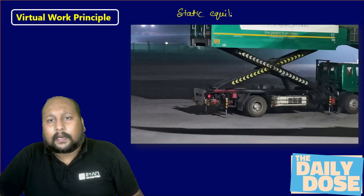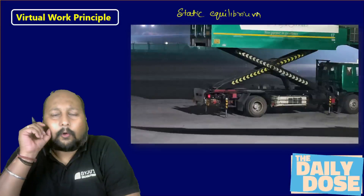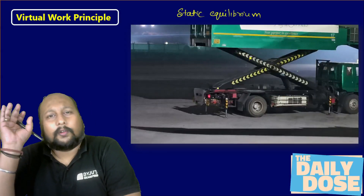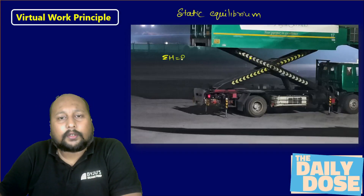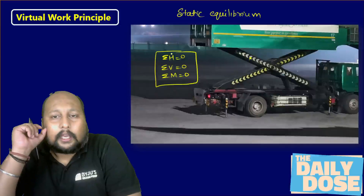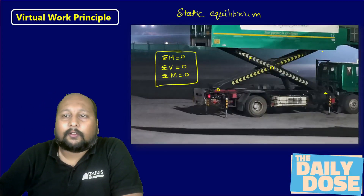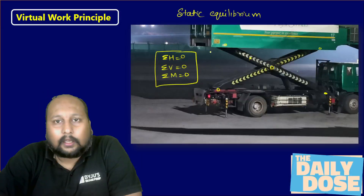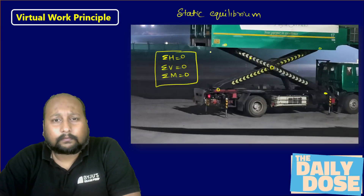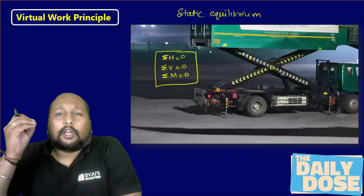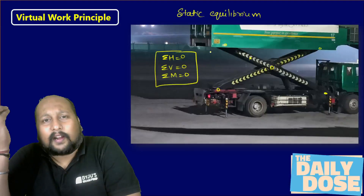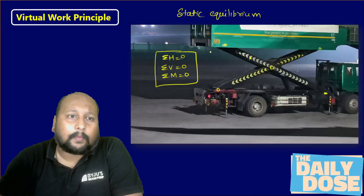If I want to calculate the reaction forces or the amount of force present at each point, the simple approach is: summation of horizontal forces = 0, summation of vertical forces = 0, summation of moments = 0. But applying this at each joint can take 10 to 15 minutes or more, with many equations and very long formulations. Let me tell you an easier method — using this method, you'll be able to analyze static equilibrium in just four to five minutes.